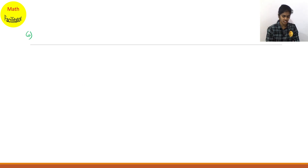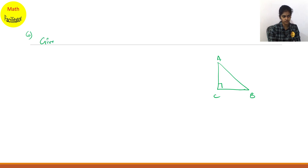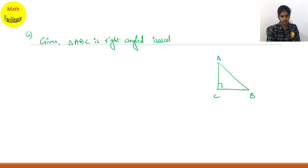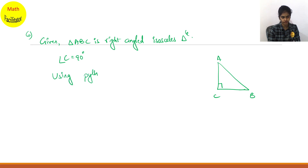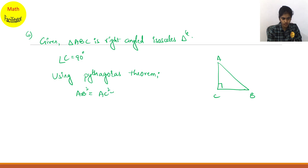In triangle ABC is an isosceles triangle, right angle at C. So you have triangle ABC, it is a right angle triangle, right angle at C. So this is A, B. Given triangle ABC is right angled isosceles triangle, angle C is 90 degrees. Using Pythagoras theorem, AB square — the hypotenuse square — is equals to AC square plus BC square.